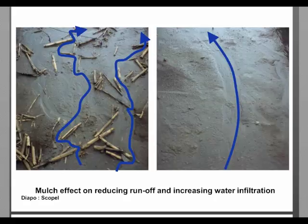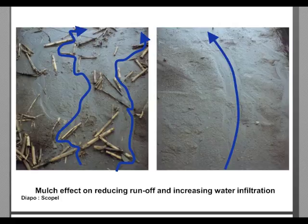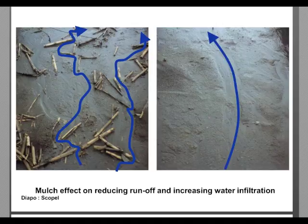How can crop residues on top of the soil reduce runoff? Due to the small obstructions on the soil surface, water cannot easily move from one point to another, and the water spends more time on the same surface, making infiltration more likely. If the soil is completely bare, water circulates easily and is lost to runoff rather than infiltration.